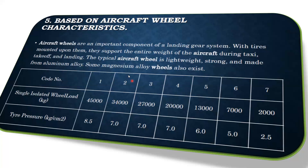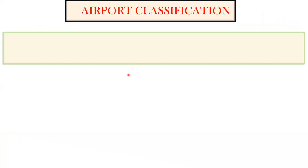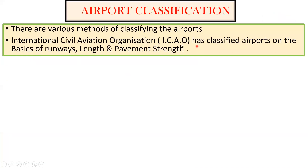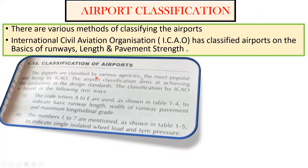Based on these standards, we classify the airport. ICAO stands for International Civil Aviation Organization and has classified airports on the basis of runway length and pavement strength. Airports are classified by various agencies, the most popular being ICAO. The airport classification aims at achieving uniformity in design standards. The classification by ICAO is based on two ways: code letters A to E to indicate the basic runway length, width of runway pavement, and maximum longitudinal grade, and numbers one to seven to indicate the single isolated wheel load and tire pressure.